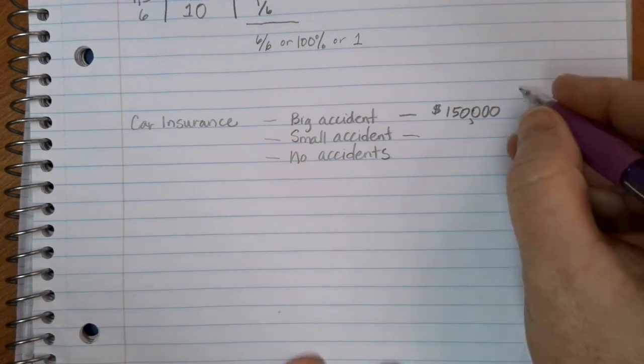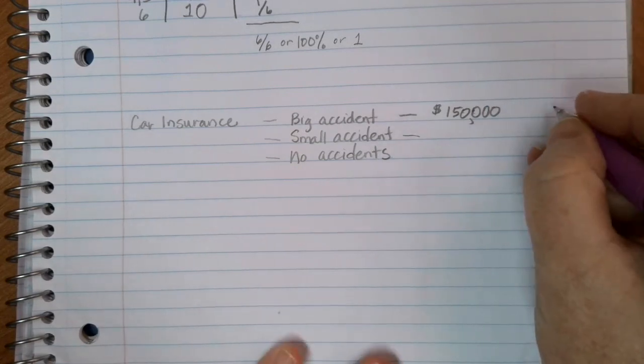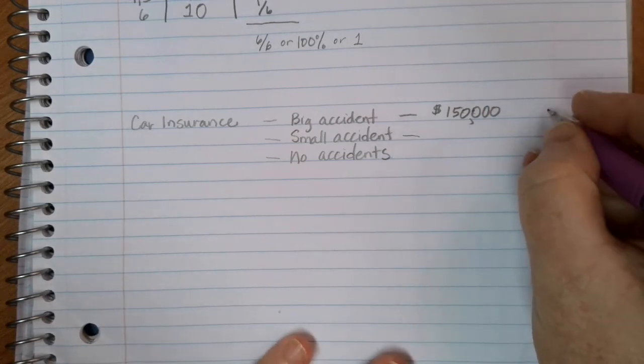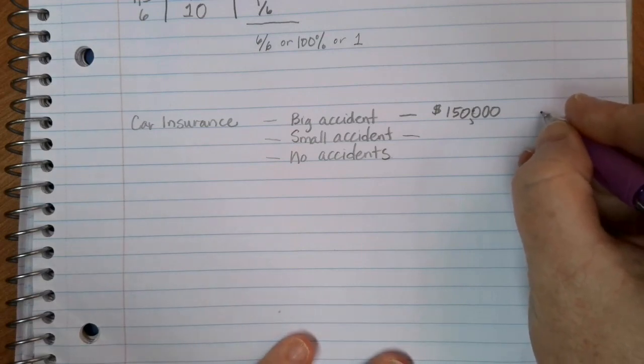Within a given year, the chance of someone being in a big accident is about 0.05 or about 0.5% rather.